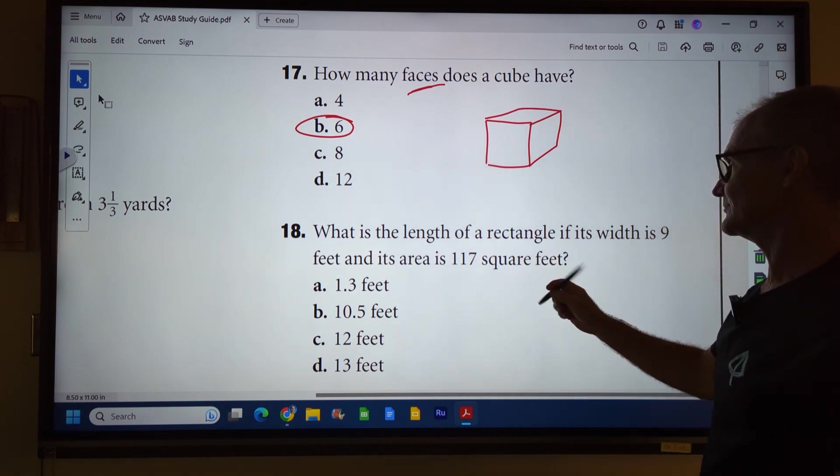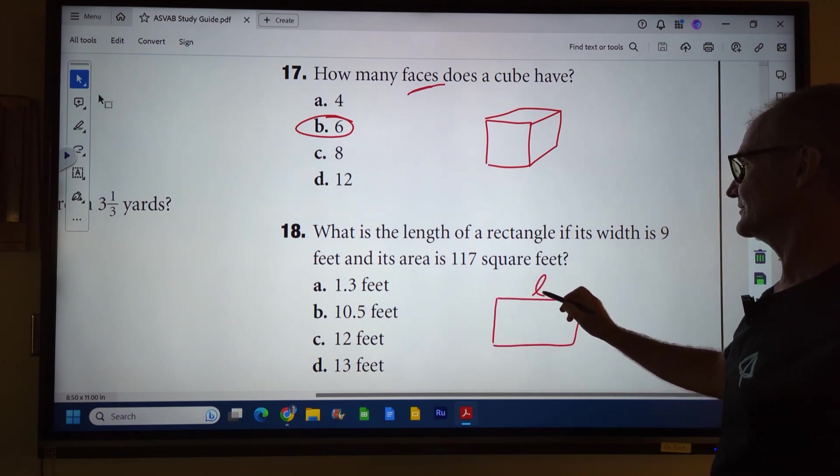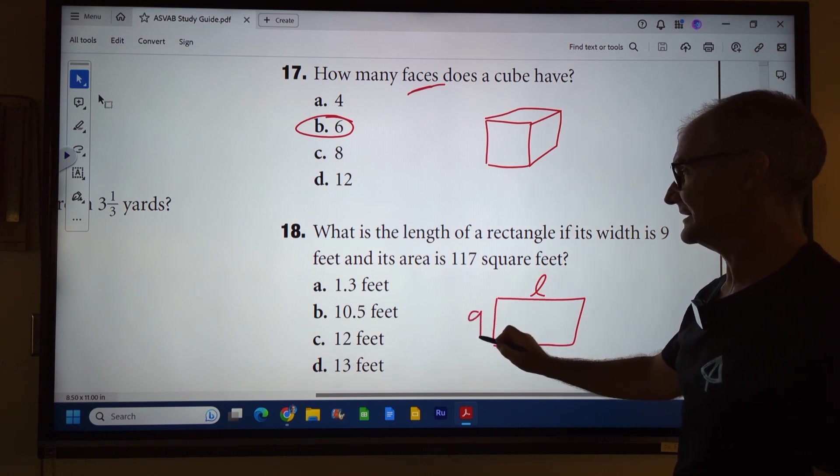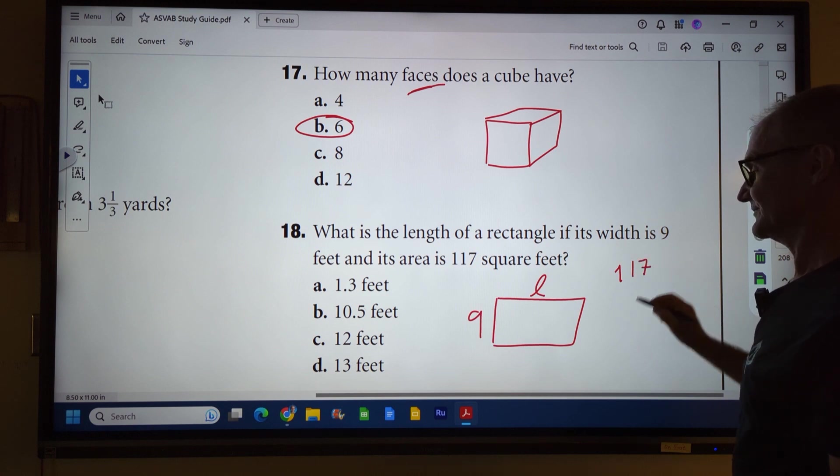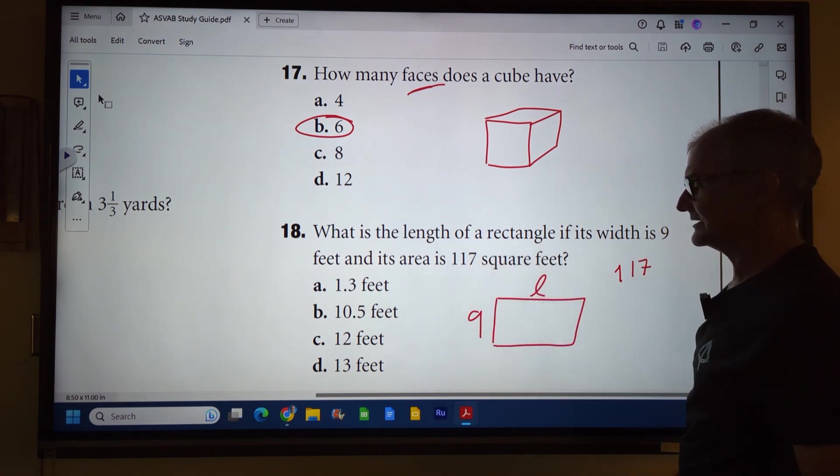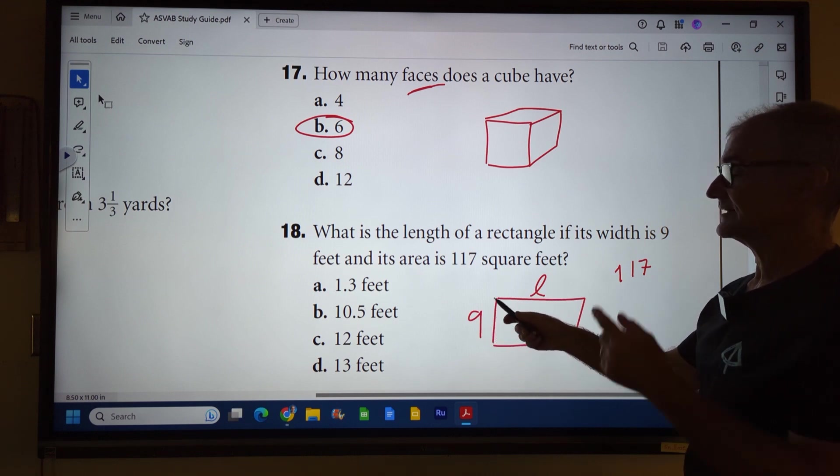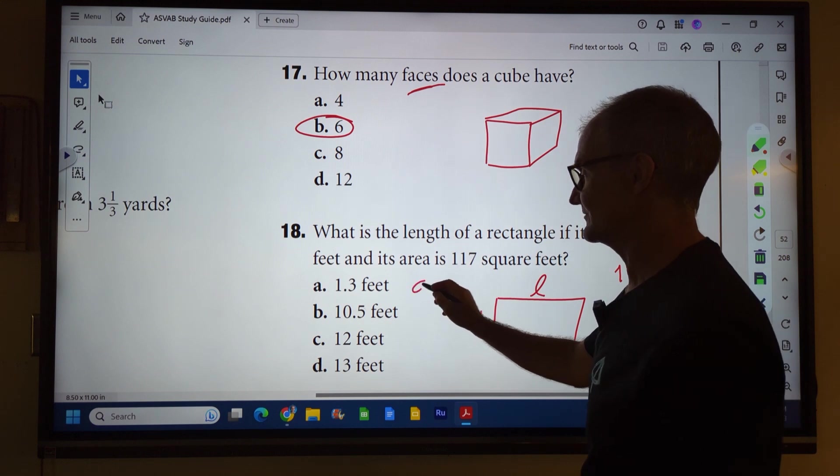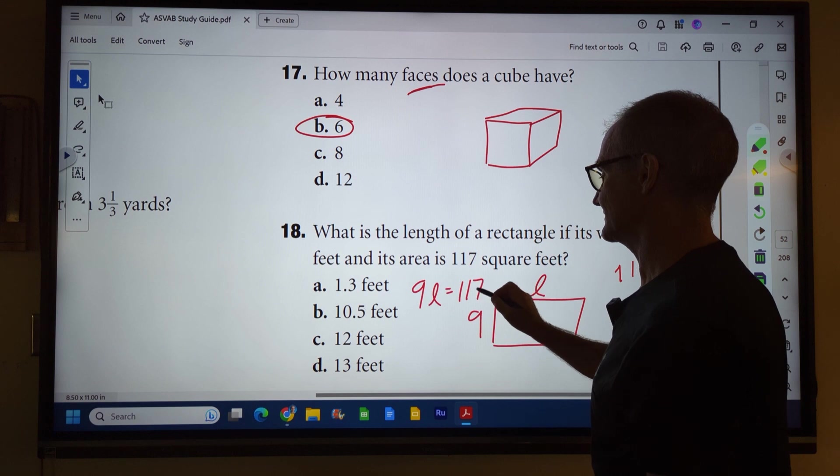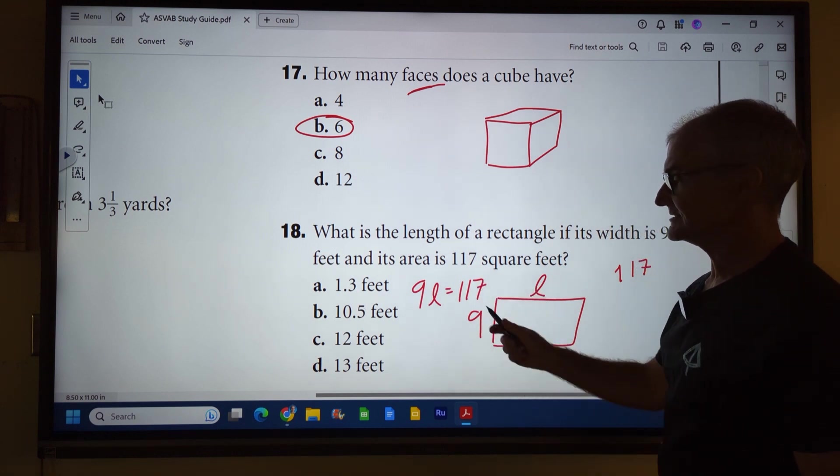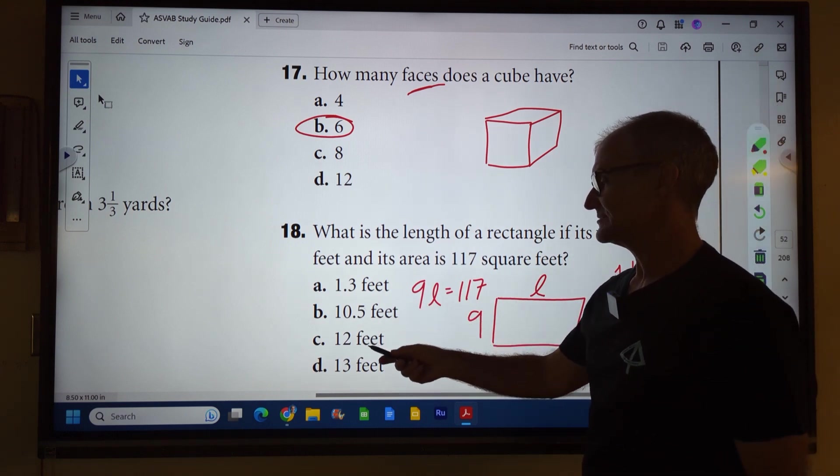Number 18: What is the length of a rectangle when the width is nine and its area is 117? So just kind of converting that sentence to a picture is a big help. I have a rectangle. I know area is length times width. It's kind of like that algebra problem before. I have nine times L equals area 117. And then I just have to do 117 divided by nine.